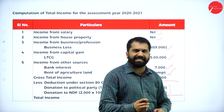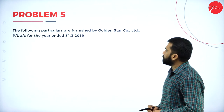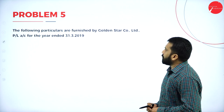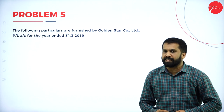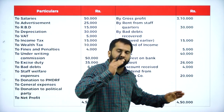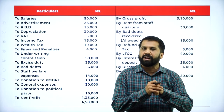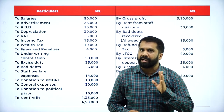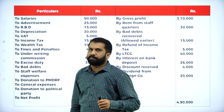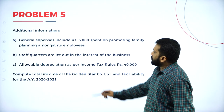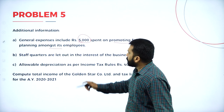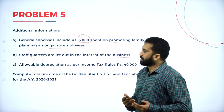Now we will go for the next problem — the easiest one, even you can solve this. Following particulars are furnished by Golden Star Company Limited, profit and loss account for the year ended 31st March 2019. In this, we have all the expenditures and all the incomes. Adjustments: general expenses include 5,000 spent on promoting family planning — part of the business. Stock quarters are let out for interest of business — business purpose.